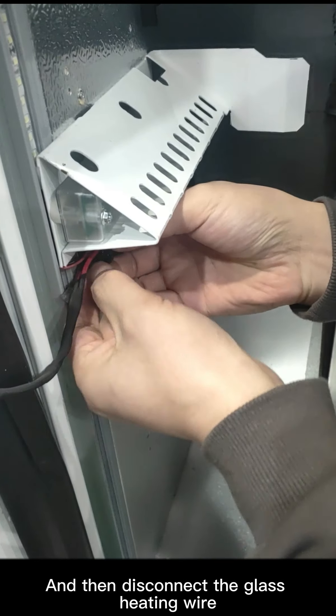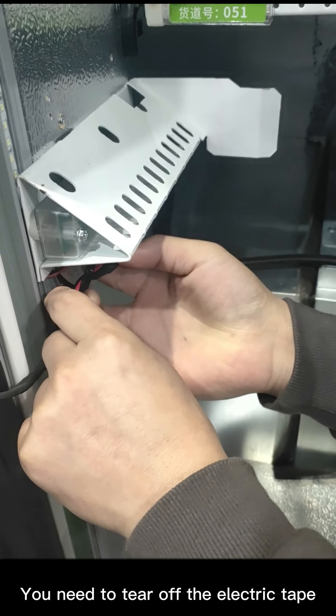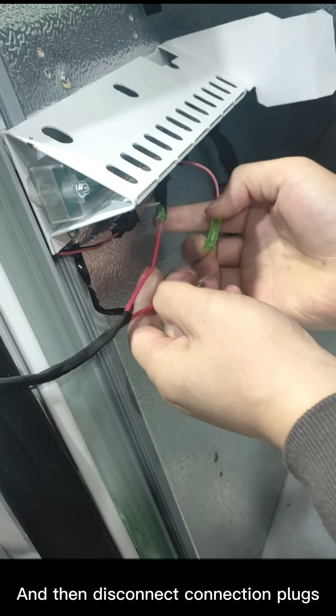Then disconnect the glass heating wire. To disconnect the glass heating wire, you need to tear off the electric tape and then disconnect the connection plugs.